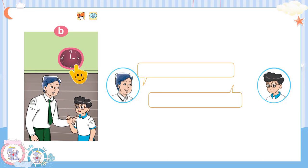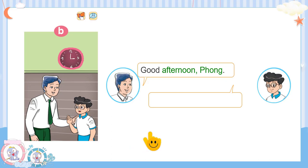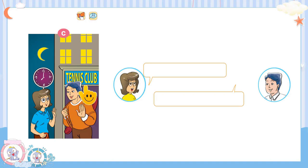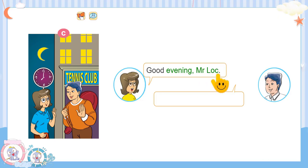Vậy còn bây giờ là 3h chiều. Vậy Mr. Locke... Bây giờ là 7h tối. Miss Hiền và thầy Lộc gặp nhau ở câu lạc bộ tennis. Vậy Miss Hiền sẽ chào như thế nào? Good evening Mr. Locke! — Good evening Miss Hiền!